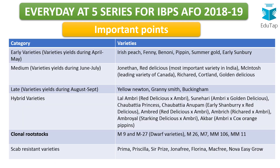It is not easy to memorize all these things, so read through them once or twice. Apple varieties are classified as early (yielding April-May), medium (June-July), and late (August-September). Among medium varieties, red delicious is the most important variety in India. McIntosh is a leading variety of Canada. Try to be familiar with these names.